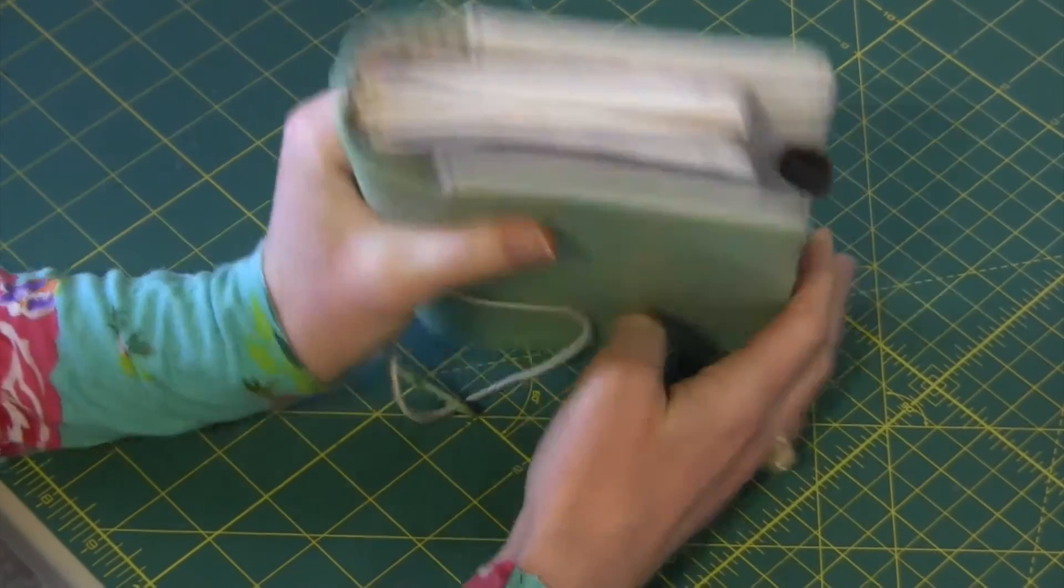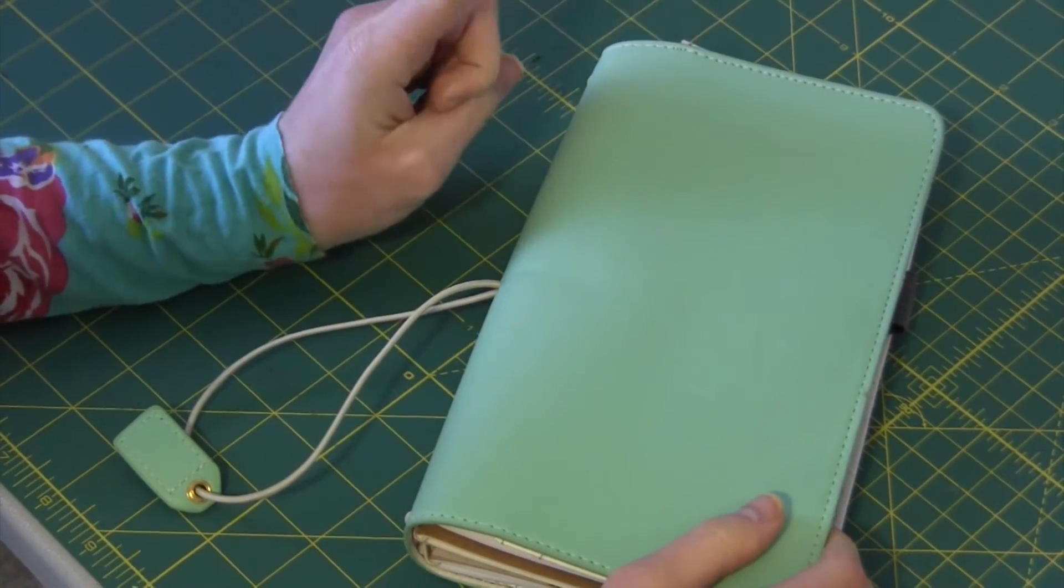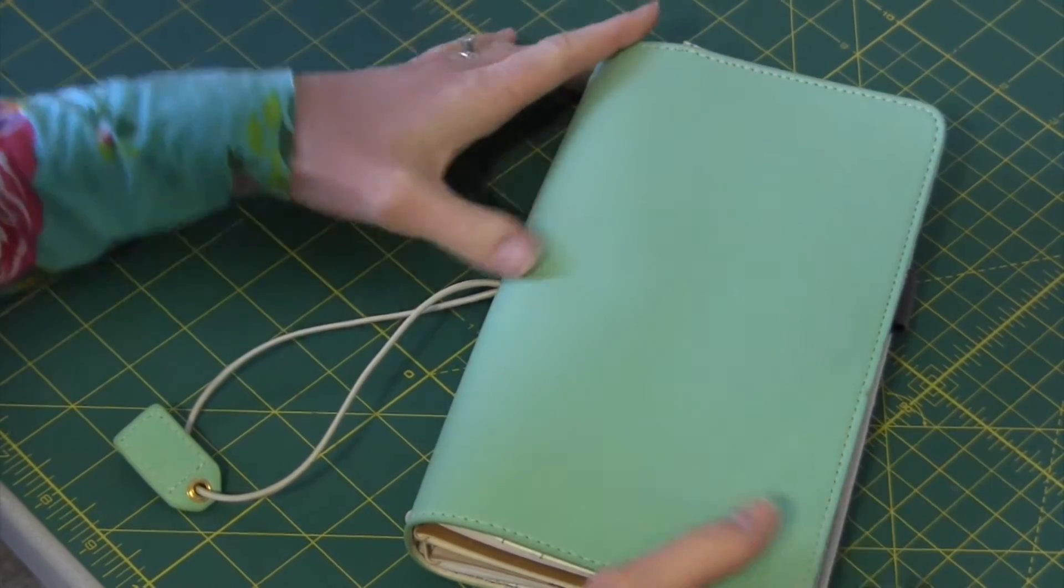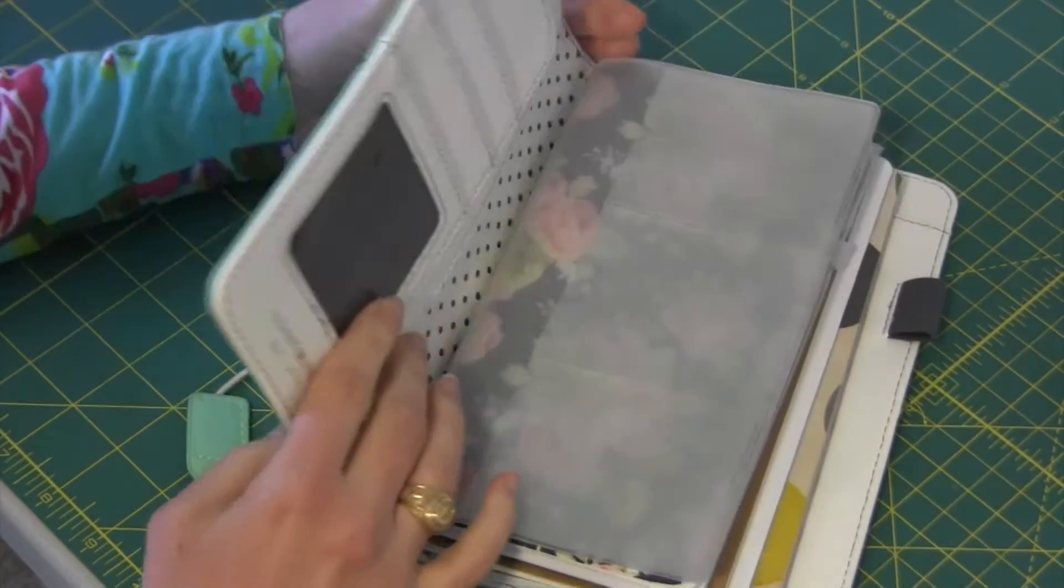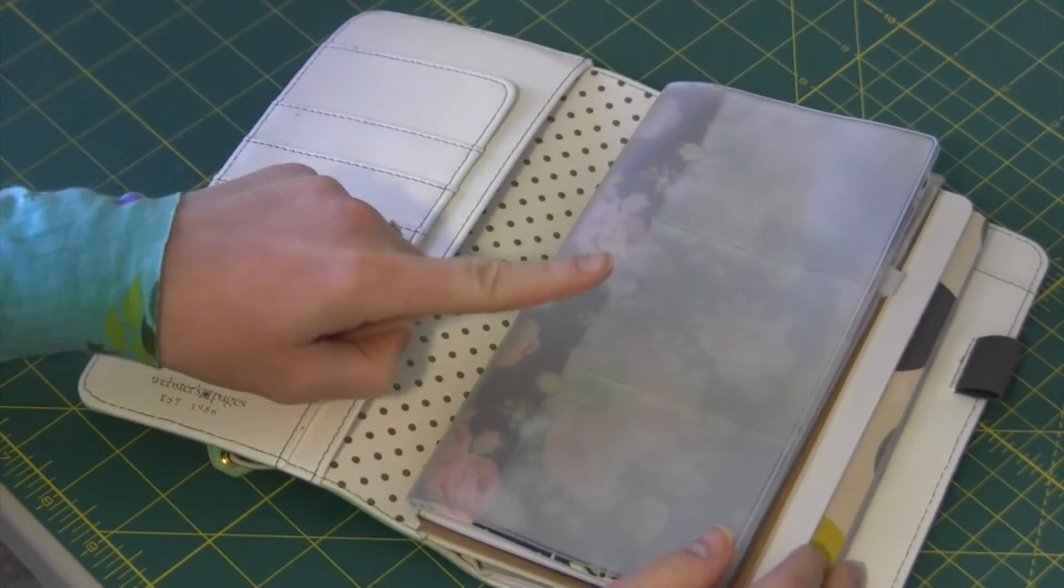As you can see it's pretty stuffed. I mean it's got a lot in here but you can actually put, I don't know what Webster's Pages says, but you could actually put up to eight books in this and you're like what? Well let me show you how.